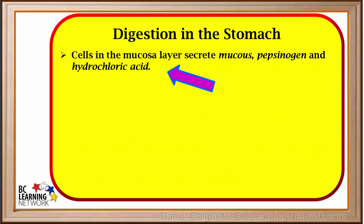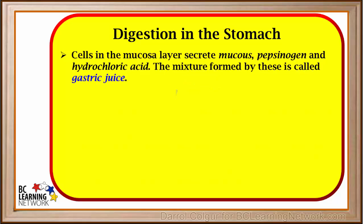When food enters the stomach, cells in the mucosal layer secrete mucus, pepsinogen, and HCl. Mucus helps to lubricate everything. The mixture formed by all these things is called gastric juice. Because it contains hydrochloric acid, gastric juice is very acidic. Mucus helps protect the stomach wall from the corrosive effects of the acid.